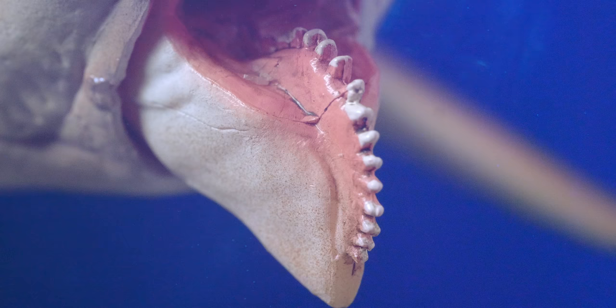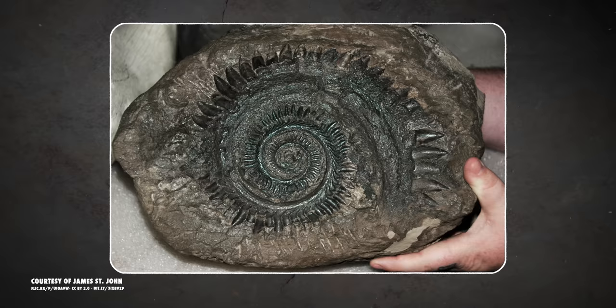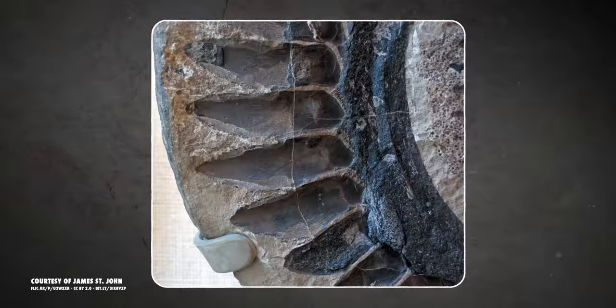These spirals of teeth, called tooth whirls, are almost all that remain of these creatures, with about 100 examples existing in collections around the world.